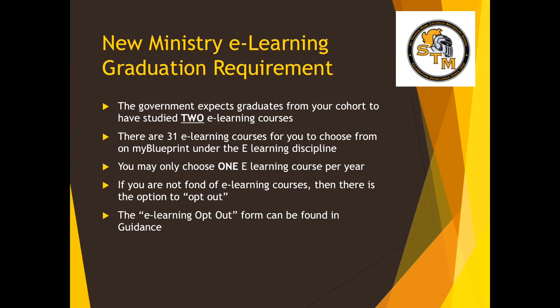E-learning courses: the government expects graduates from your cohort to have completed 2 e-learning courses. There are 31 e-learning courses for you to choose from on My Blueprint under the e-learning discipline, and these course selections are included in your option advice package. You may only choose one e-learning course per year. If you feel that e-learning is not for you, there is the option to opt out — the e-learning opt-out form can be found in guidance.